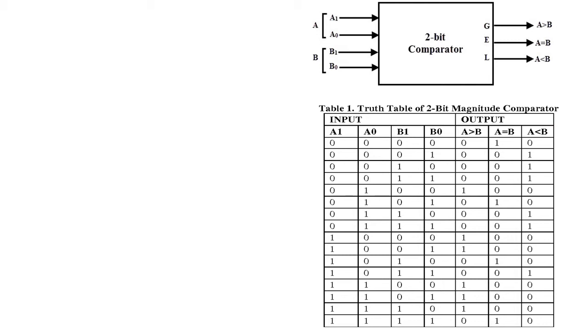Let us take the example of the first term where a1 a0 are both 0, and b1 b0 are both 0. That means A equals B. So you place 1 in case of A equals B and 0, 0 in case of A greater than B and A less than B.